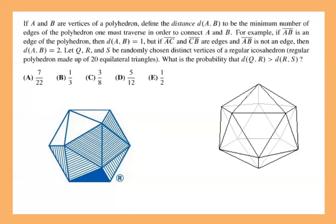By the way, these two visuals are not part of the question — they're part of the solution I added to make things quicker. The question involves three vertices Q, R, S of a regular icosahedron, which is a 20-sided polyhedron. This is actually the AMC logo, so if you were taking the test on paper, it was actually on the booklet. This is the 2D front face of that polyhedron, and this is the 3D version. Keep both in mind because I'll use them for two different solutions.